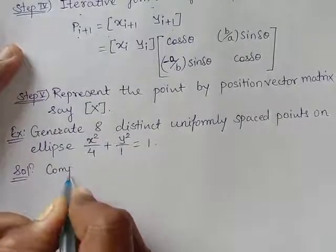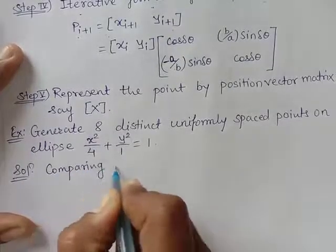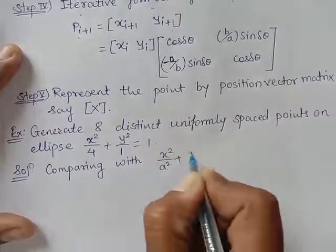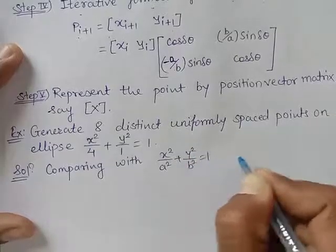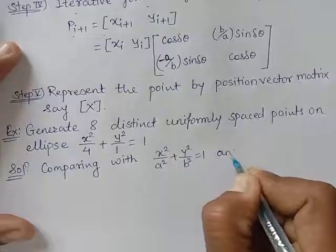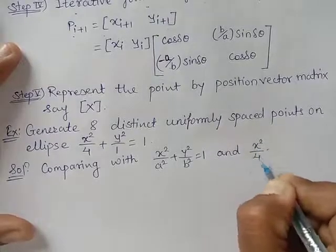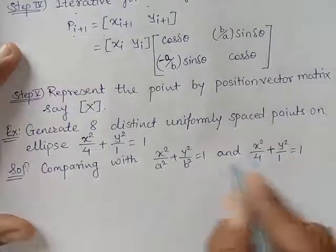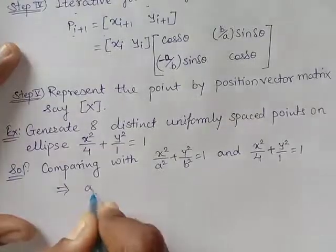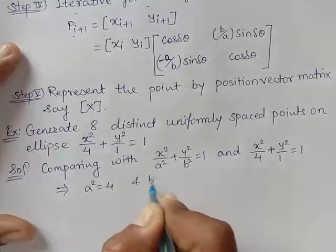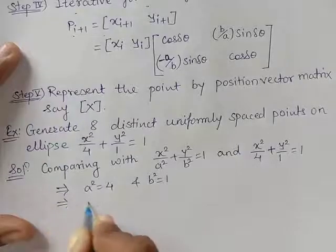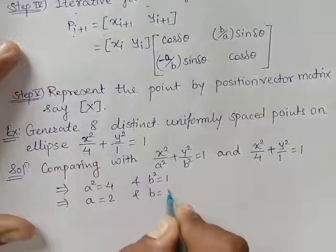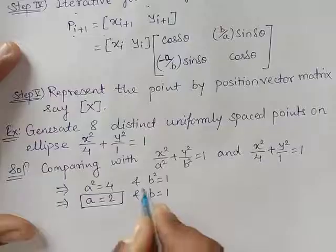Comparing with the standard equation of ellipse: x squared upon a squared plus y squared upon b squared equal to 1, and our equation x squared by 4 plus y squared by 1 equal to 1 — we compare these two. That gives a squared equal to 4 and b squared equal to 1. So a equals 2 (taking positive since it is a length) and b equals 1.